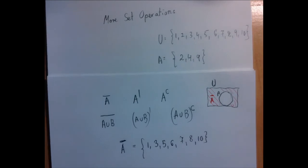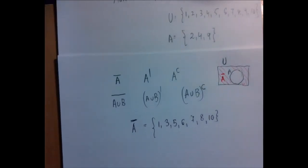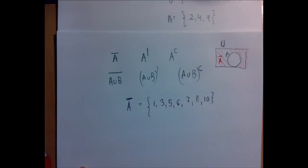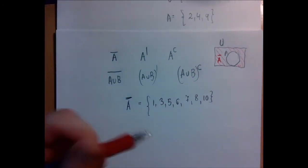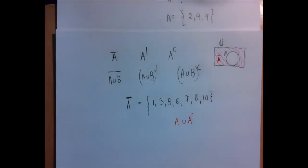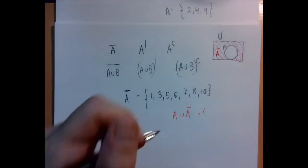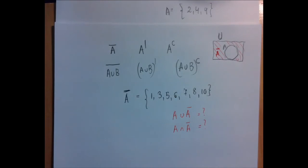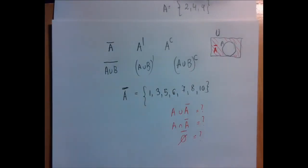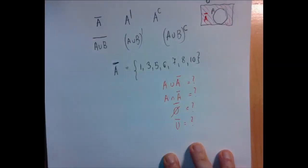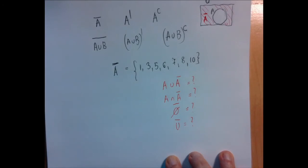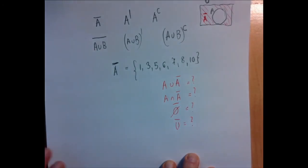So that's the definition. I'm going to let you think about some interesting things: what happens if you take a set and its complement and take the union — what do we get? What about the intersection? What would be the complement of the empty set? What would be the complement of the universal set? I'll let you think about that.